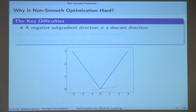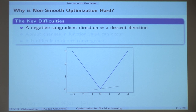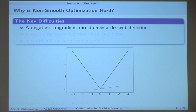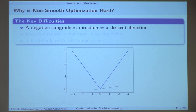The very first difficulty in non-smooth convex optimization: in a smooth convex function, if I take a small step in the direction of the negative gradient, my objective function will necessarily decrease. That is the definition of a gradient — either my gradient is zero and I stay where I am, or taking a small negative-gradient step always decreases the objective. Unfortunately, you cannot say this for a subgradient: if I take a negative subgradient direction, I cannot guarantee it is a descent direction.